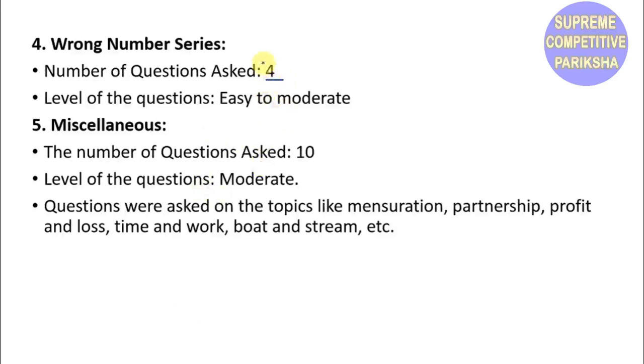Wrong Number Series had 4 questions with easy to moderate level difficulty. These are miscellaneous type questions. Wrong number series questions have been coming in the last few shifts. In number series, there are two types: one is missing and the other is wrong. In this shift, wrong type appeared. Miscellaneous had 10 questions with moderate level, covering topics like mensuration, partnership, profit and loss, time and work, boat and stream, etc.